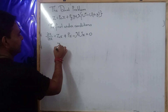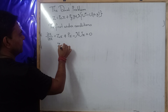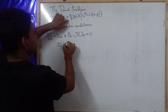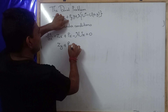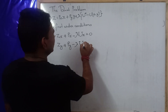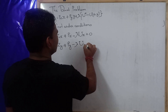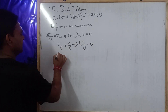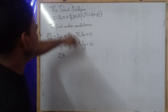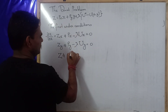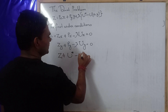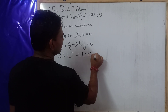Similarly, taking the partial derivative of Z with respect to y: Py − λ·Uy = 0. And the partial derivative with respect to λ gives: u* − U(x, y) = 0.